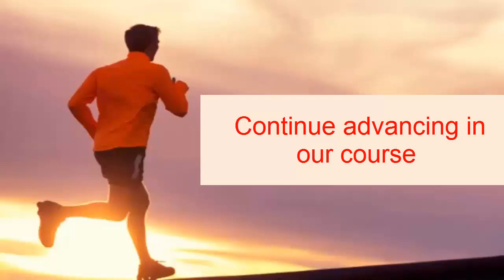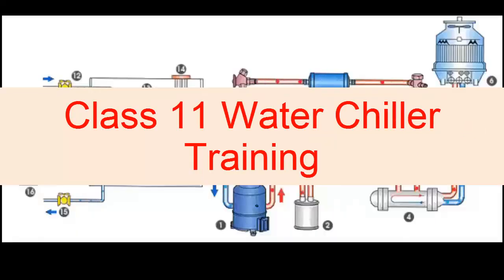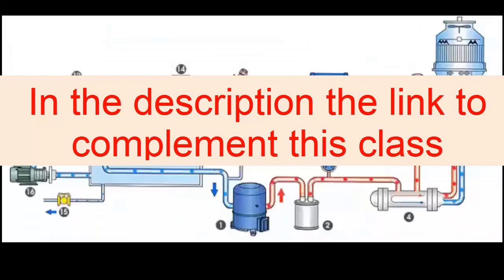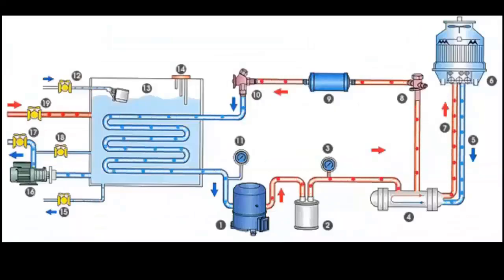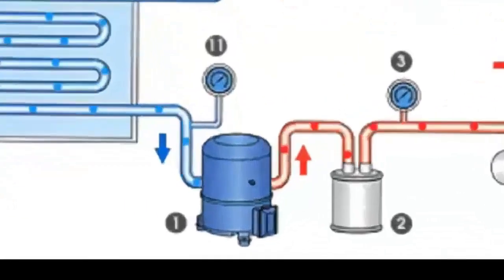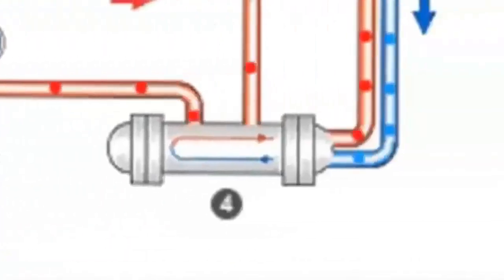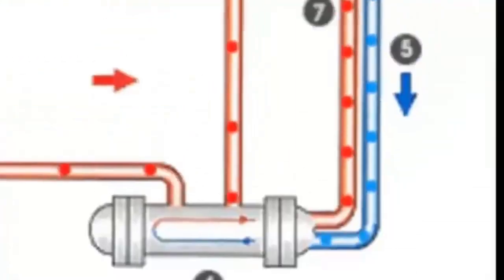Welcome to class number 11 of our chiller course for beginners prepared by Chiller World, the channel of water chillers and industrial refrigeration. On the screen we have an animation system that represents a water-cooled chiller. We can logically see its main parts: in the lower part we have the compressor with number one, on the right we have the water-cooled condenser, and at this point the cooling tower — this is the circuit to cool the condenser.